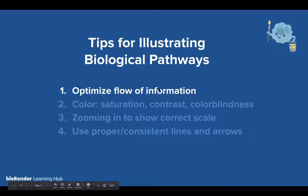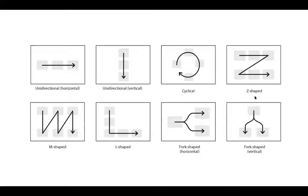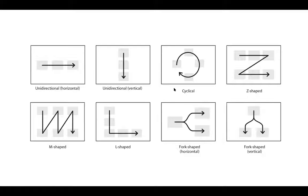Tip one is optimizing flow of information. It boils down to a few basic information flows or compositions. You want to adhere to at least one, at most two of these. Flow should be unidirectional — left to right or up to down as much as possible. Try to stay away from going the other direction. Cyclical works if something is a feedback loop. A Z-shape is very common for long experimental protocols or workflows.